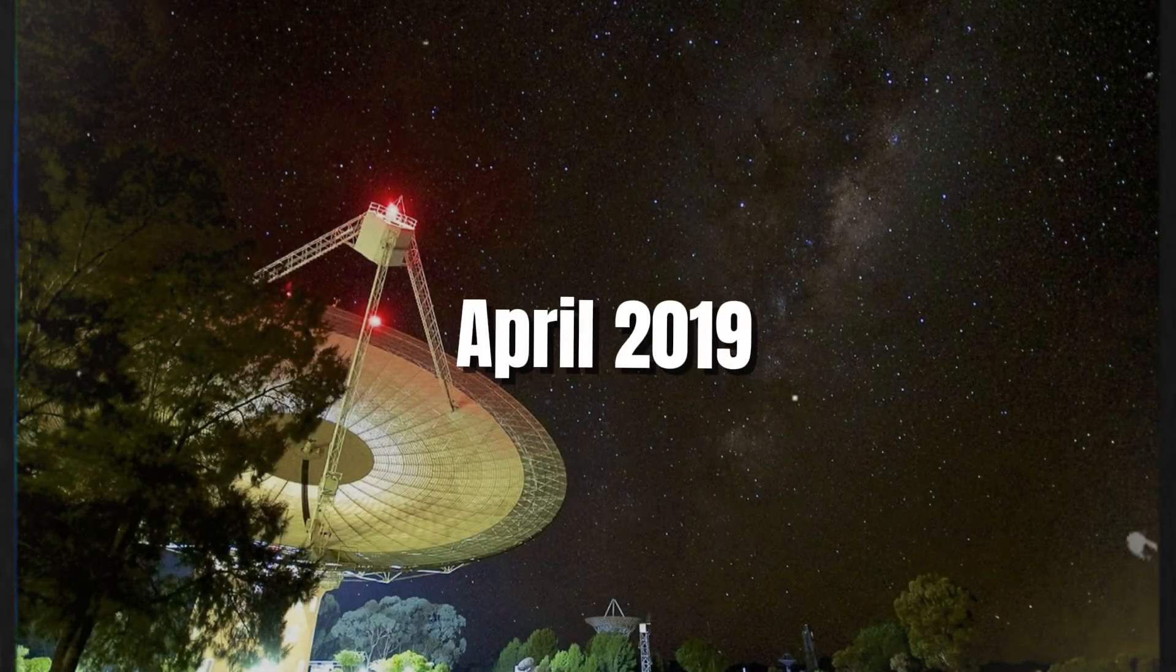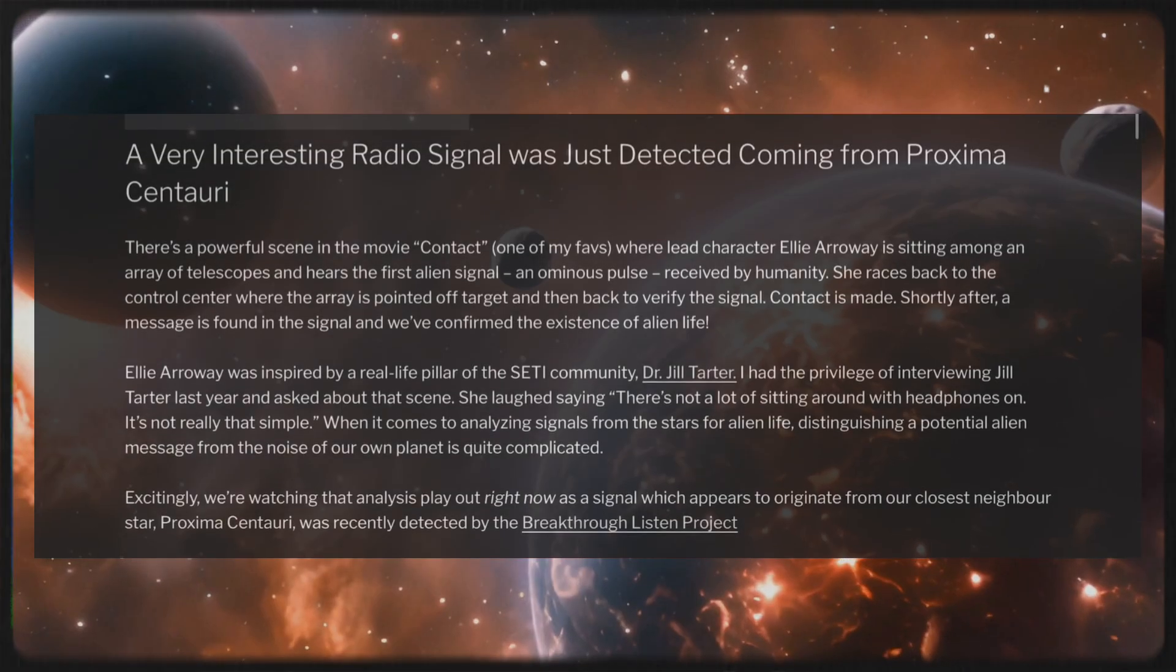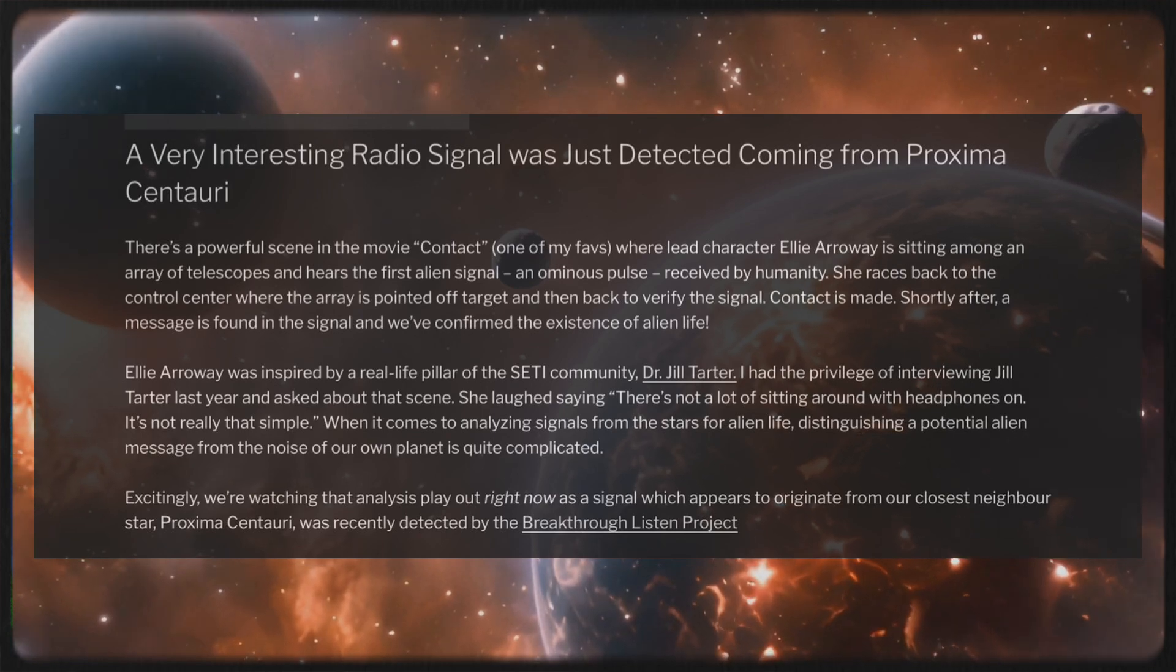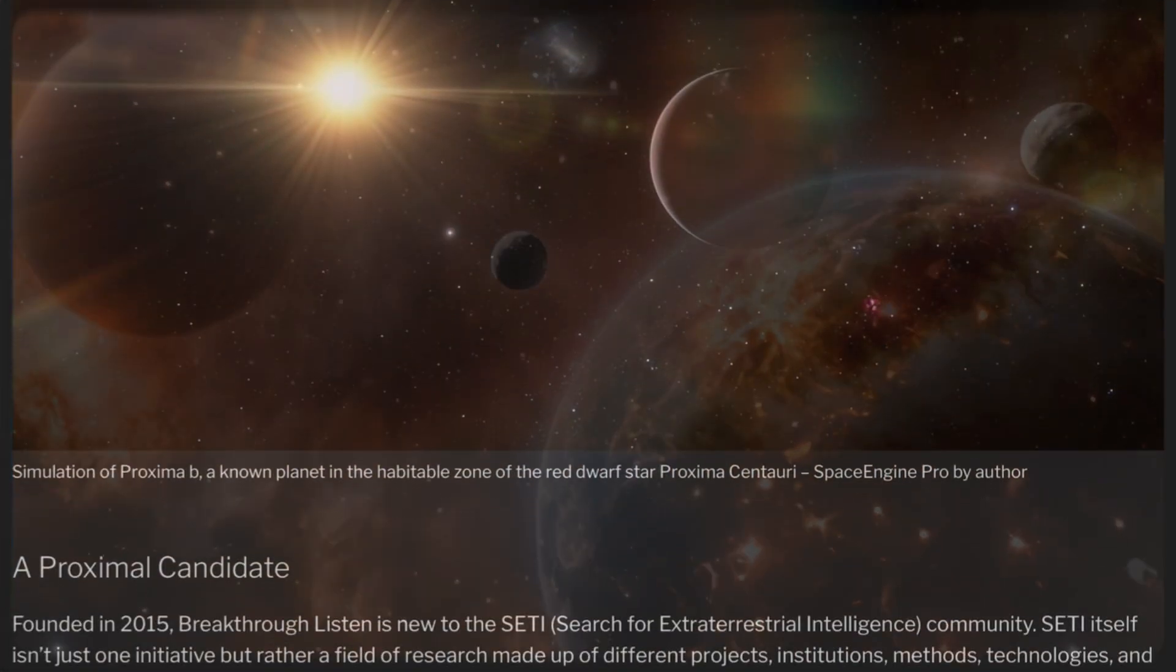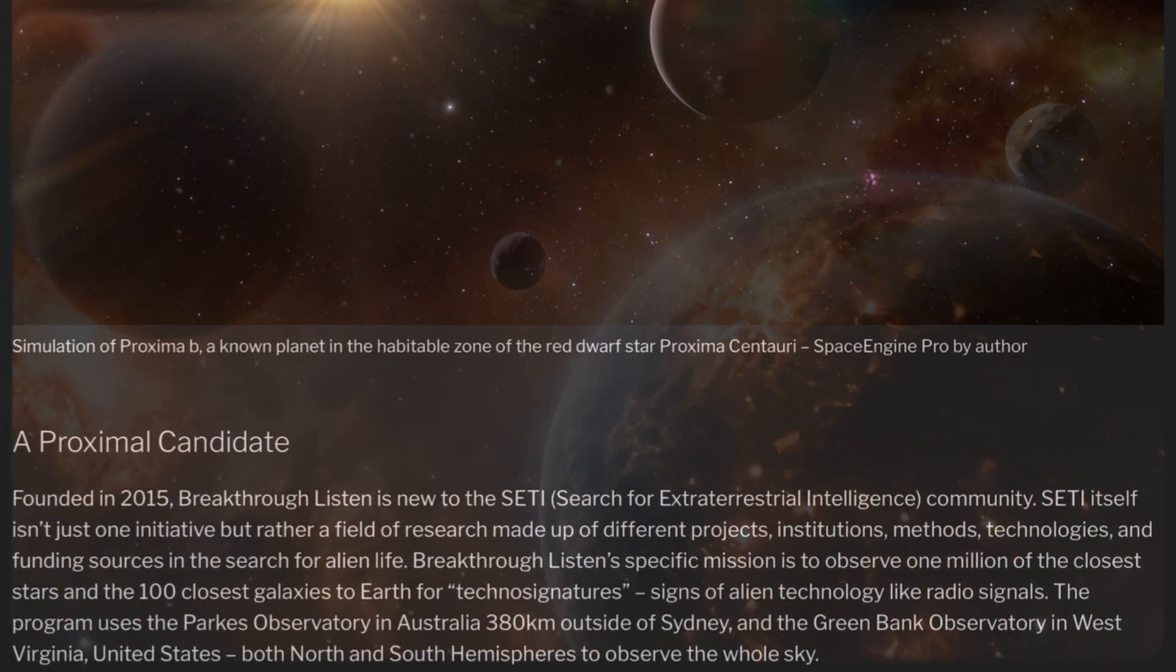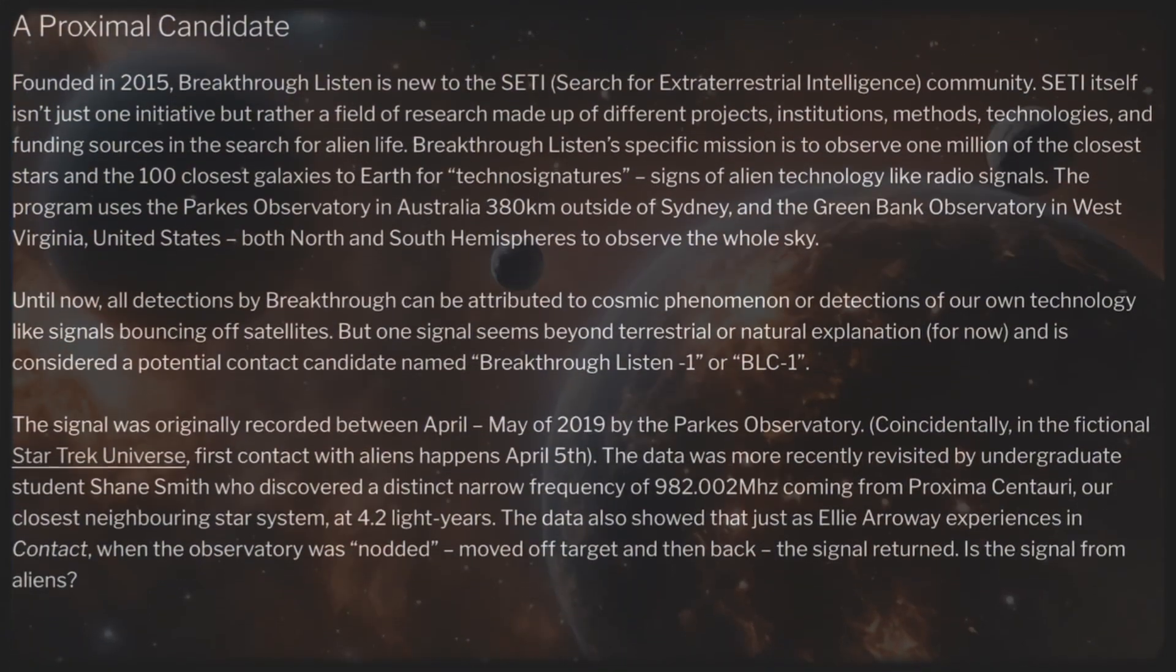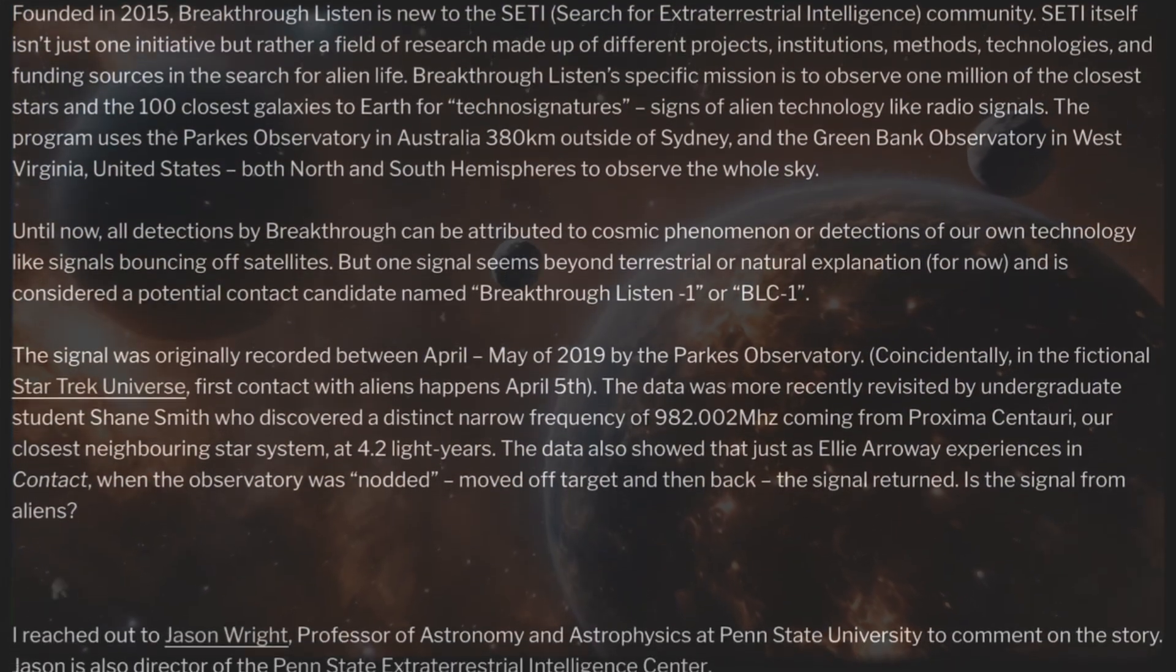In April 2019, a radio signal was detected coming from deep space. Its origin was identified as the Proxima Centauri region, located 4.37 light-years away. While this distance may seem significant, the next nearest star is three times farther.